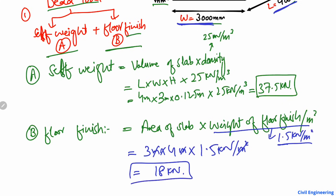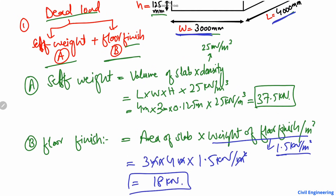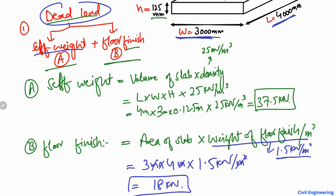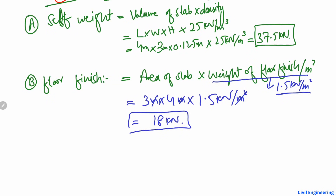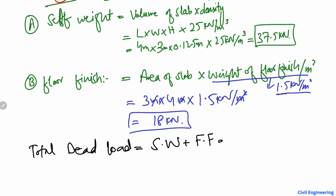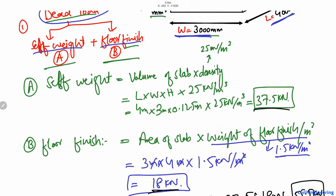Now we find the total dead load. The total dead load is equal to the self-weight plus the floor finish load. Self-weight is 37.5 kilonewton plus 18 kilonewton for the floor finish, giving a total dead load of 55.5 kilonewton acting on the slab.